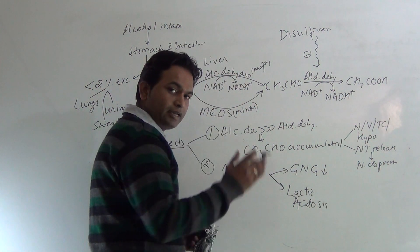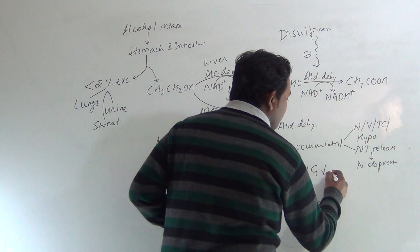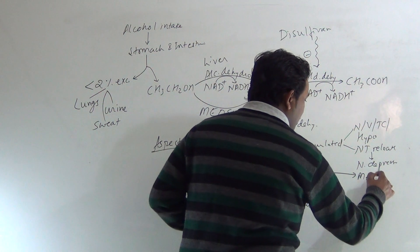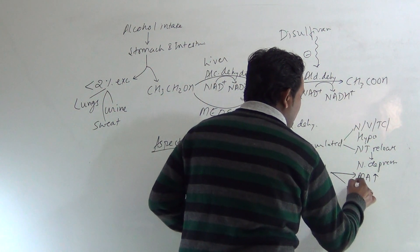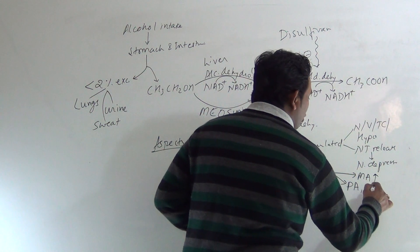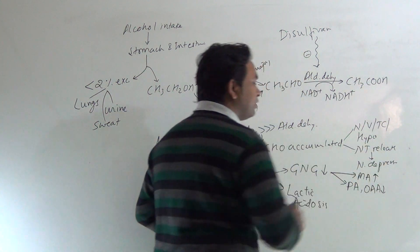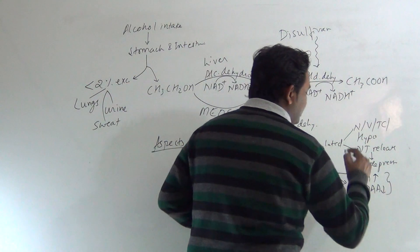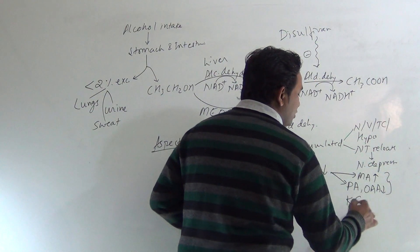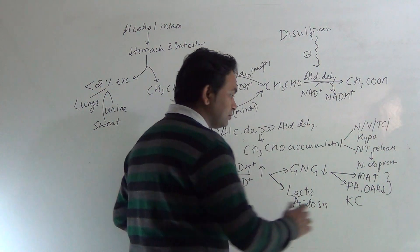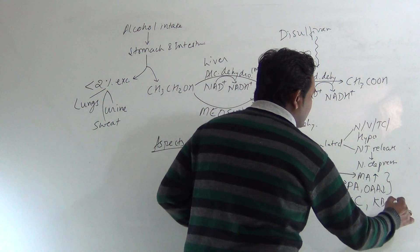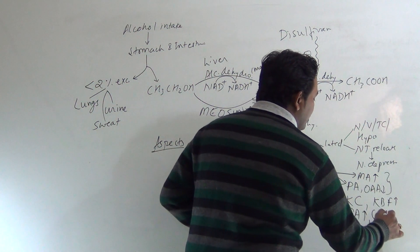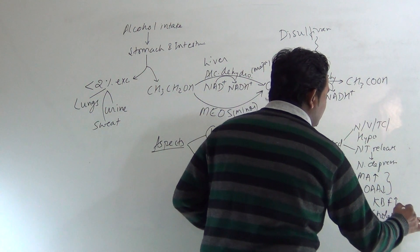Because of decreased gluconeogenesis, malic acid accumulates and pyruvic acid and oxaloacetic acid decrease. These result in decrease in rate of Krebs cycle. Ketone body formation increases, fatty acid synthesis increases, and even cholesterol synthesis increases.